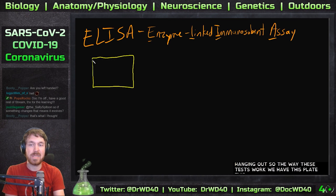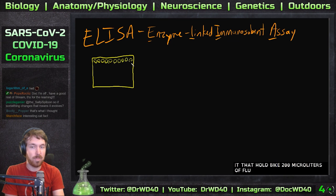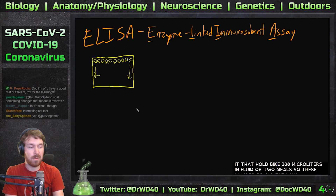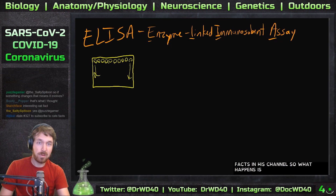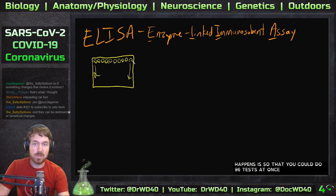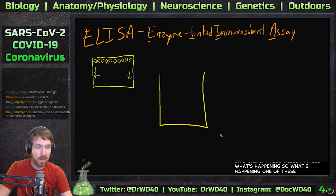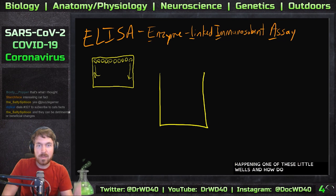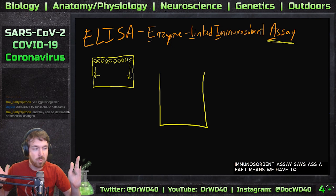We have this plate with 96 little wells in it that hold about 200 microliters — or 0.2 milliliters — of fluid. These wells go all the way down through the plate. You could do 96 tests at once. Let's zoom in to one of these wells to see what's happening in this immunosorbent assay.